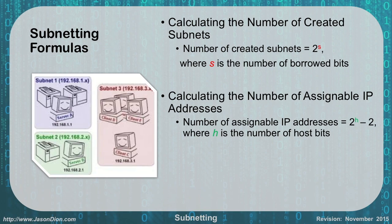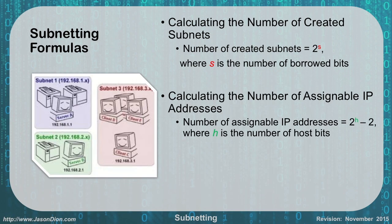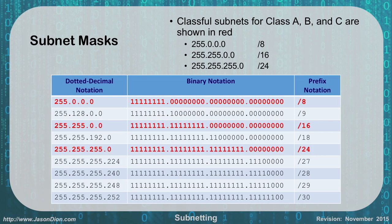Subnetting formulas will work every single time, though they do involve a little math. To calculate the number of subnets created, use 2 to the S, where S is the number of borrowed bits. For example, with slash 9, we borrowed one bit, so 2 to the 1 equals 2 — we created two subnets on that class A scope. To calculate the number of assignable IPs, use 2 to the H, where H is the number of host bits left. With 32 total bits and 9 used for the network, we have 23 host bits, giving us 2 to the 23rd, or about 8 million addresses — still way too large.